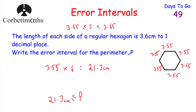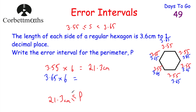Now let's consider what the perimeter could go up to but not include. The maximum side length is 3.65 centimetres, so 3.65 × 6 = 21.9 centimetres. The perimeter can go up to but not include 21.9 centimetres. So the error interval for the perimeter is: 21.3 ≤ p < 21.9 centimetres.